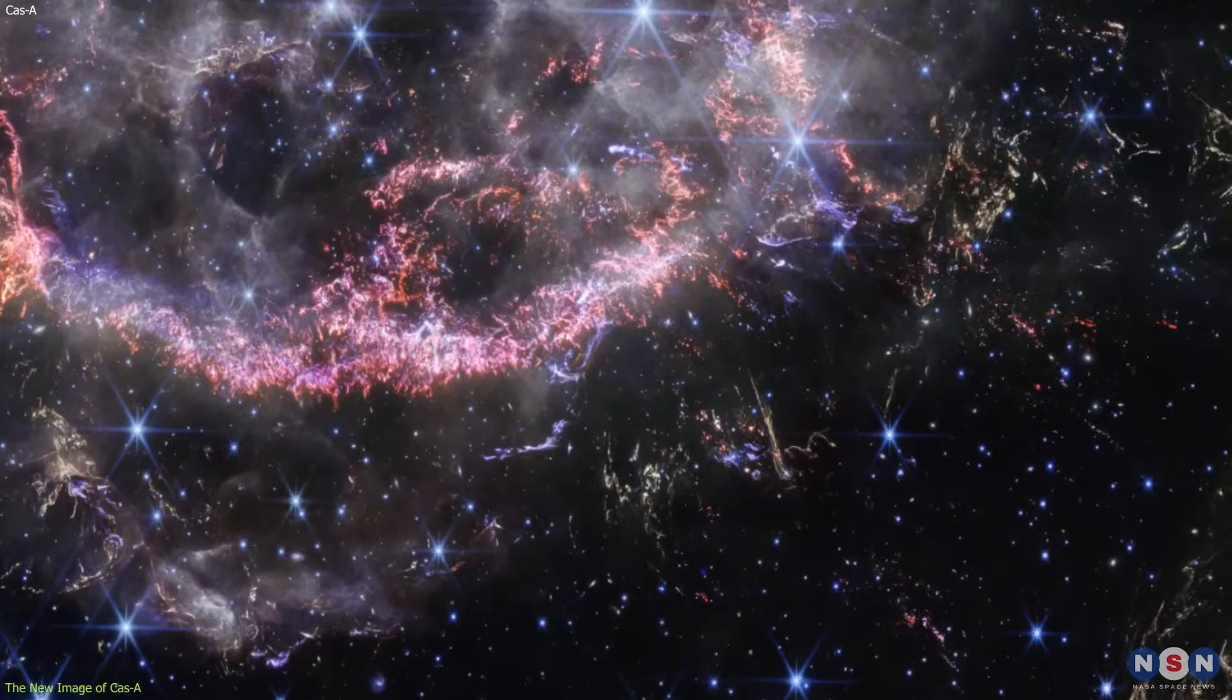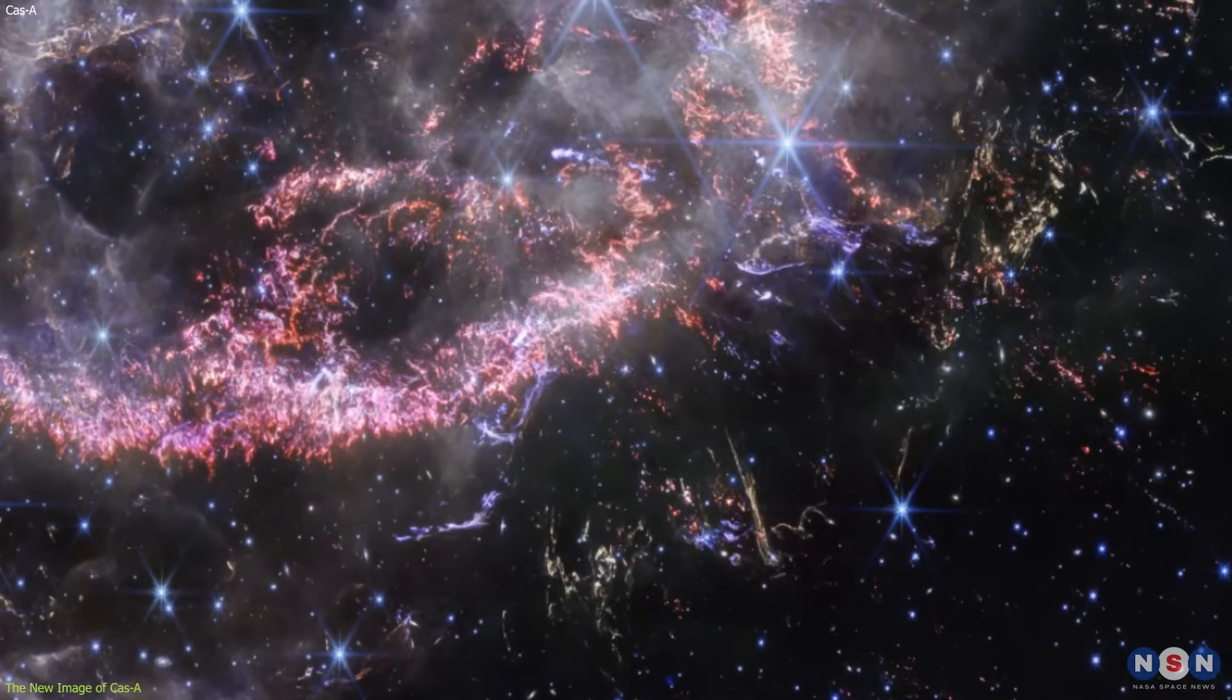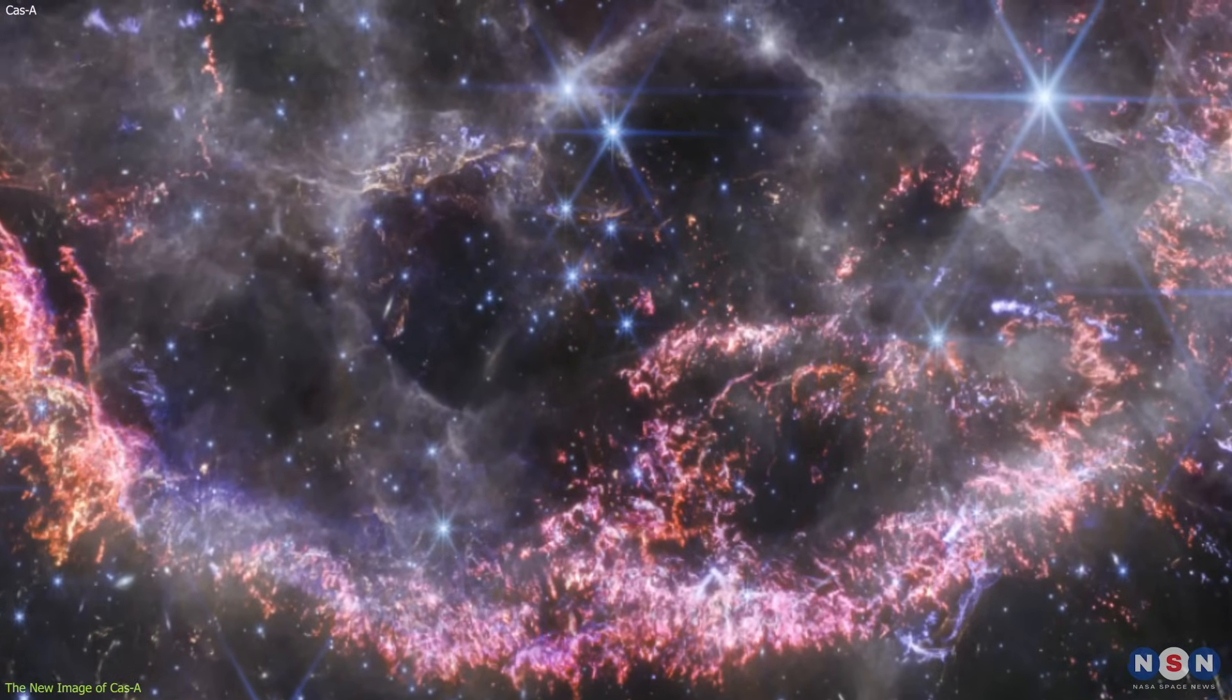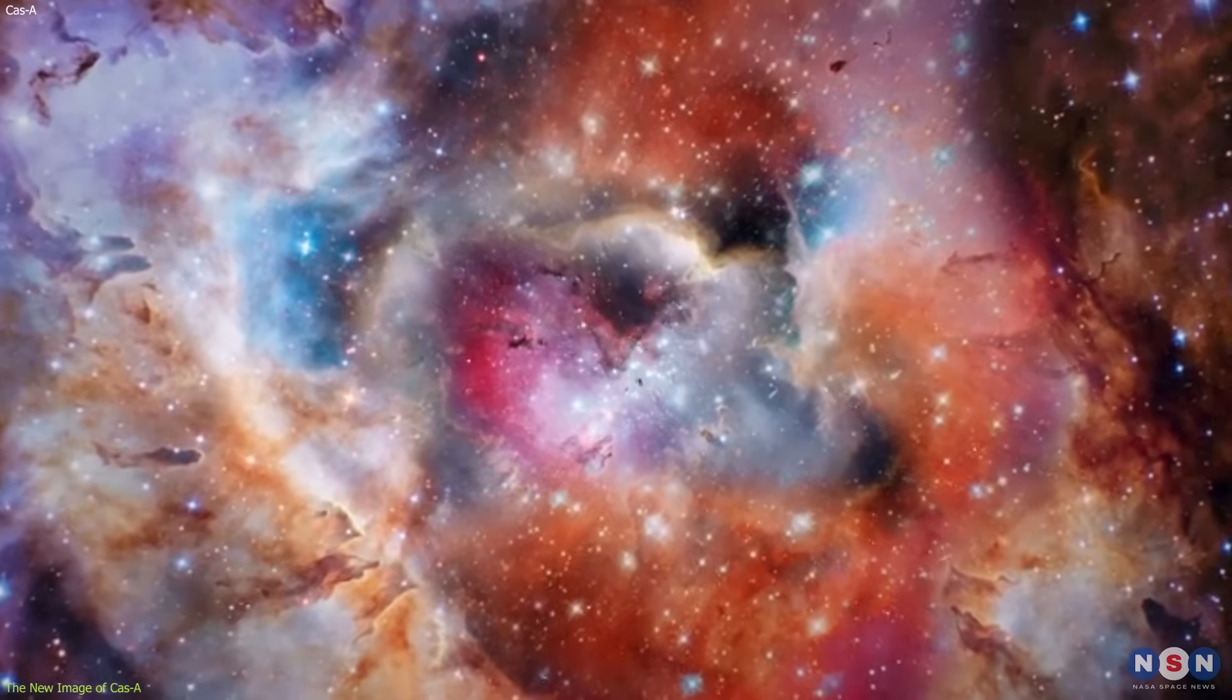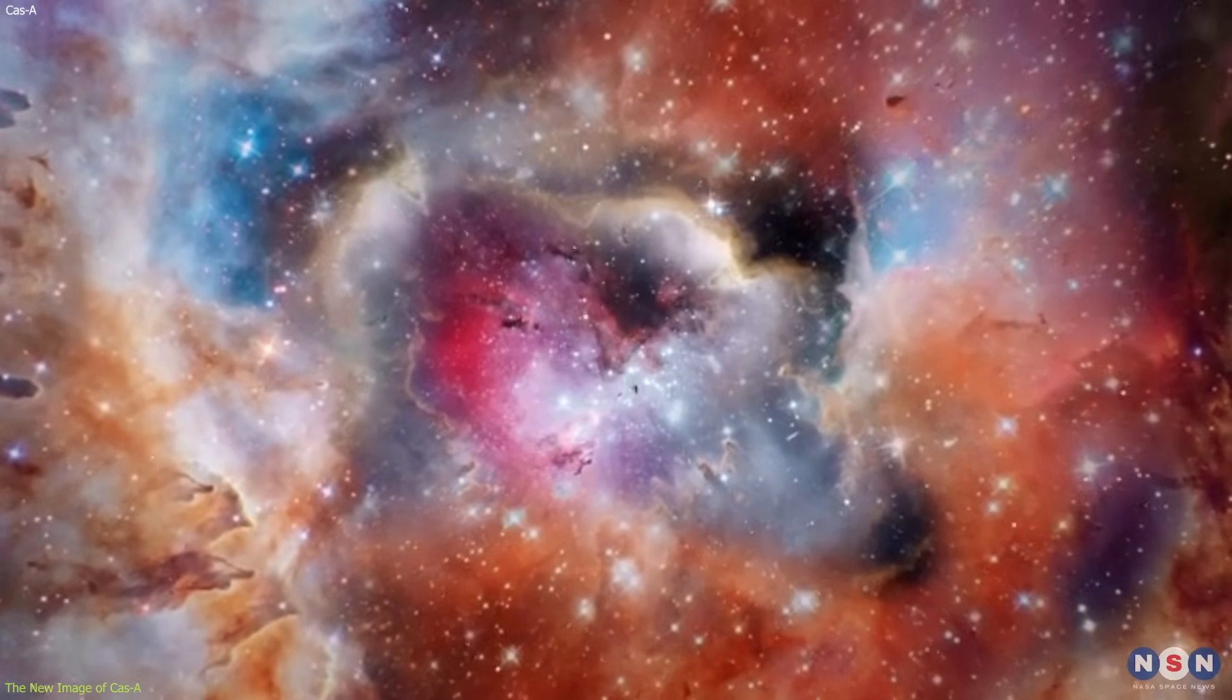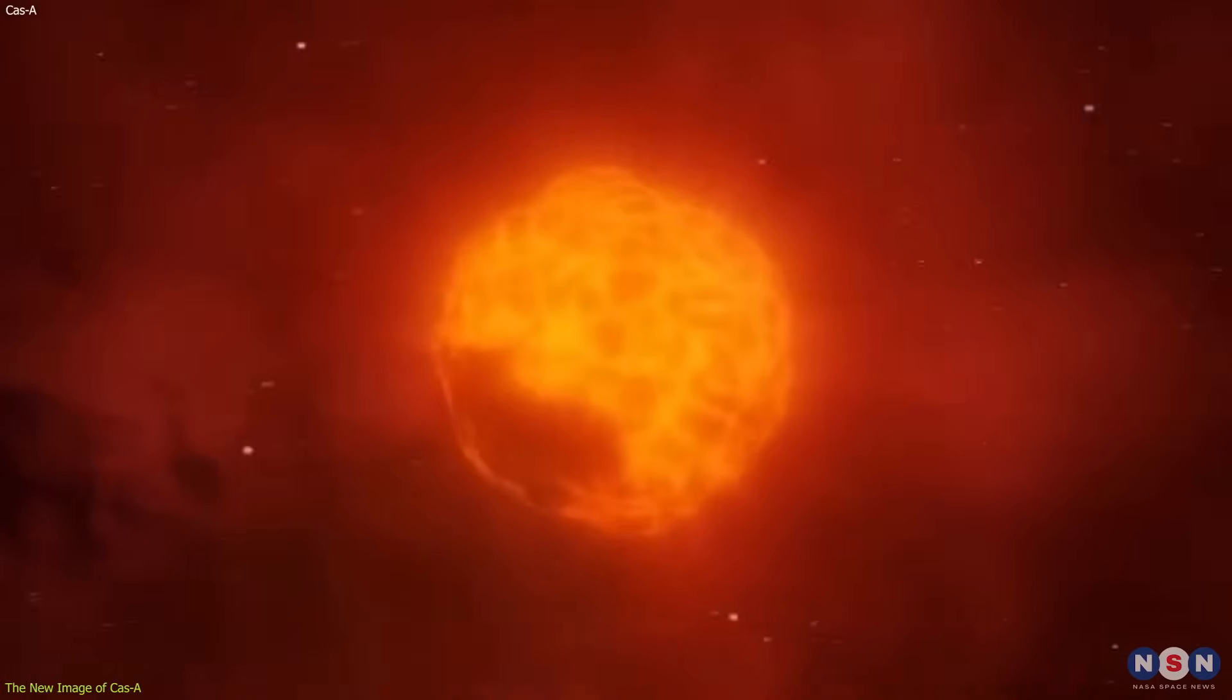It shows us some amazing features and colors that are visible in the NIRCam's wavelength range. For instance, we can see bright orange and light pink colors that represent the inner shell of it, where the gas and dust are rich in elements like sulfur, oxygen, argon, and neon. These elements were produced by the nuclear fusion inside the star before it exploded, and they tell us about the mass and age of the star.